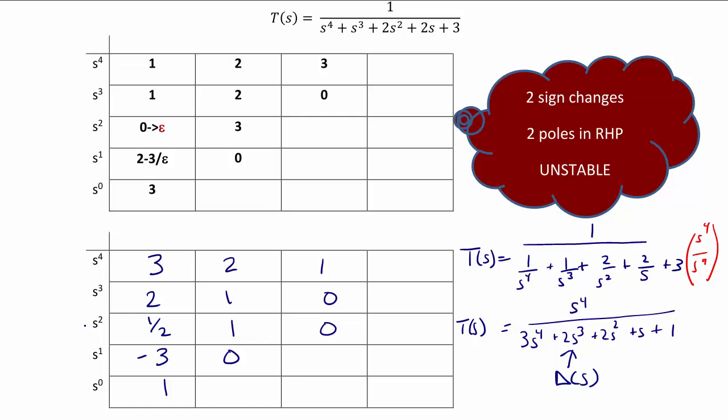So what you see here is that this is a little bit simpler without so much of the complex math. But now we can still see that there's two sign changes, one between 1 half and negative 3, one between negative 3 and 1, and so you get the same answer: two poles in the right half plane, unstable system.